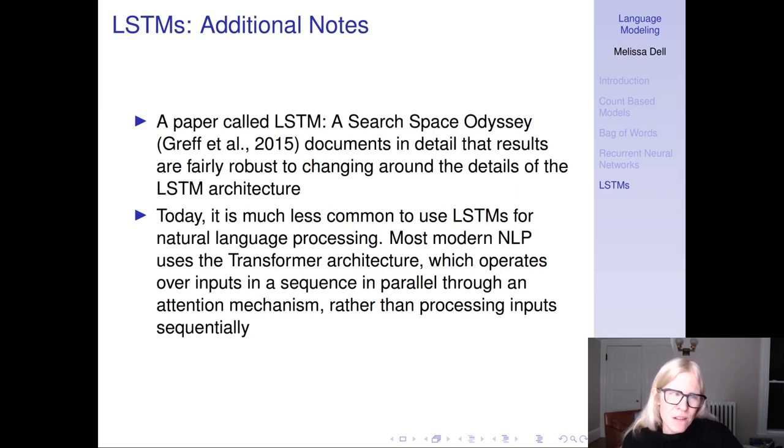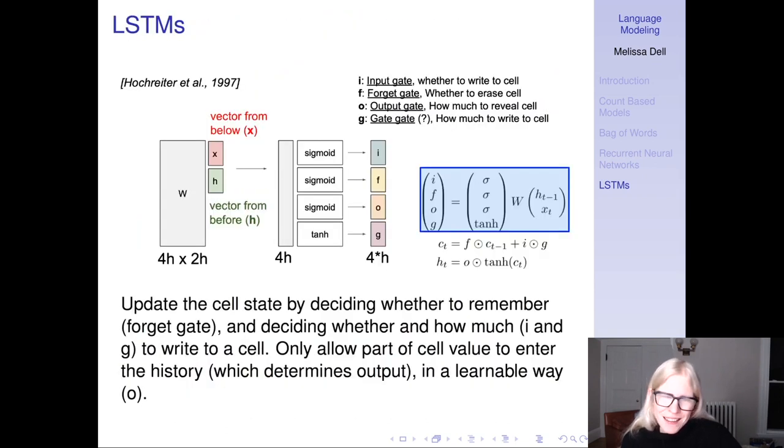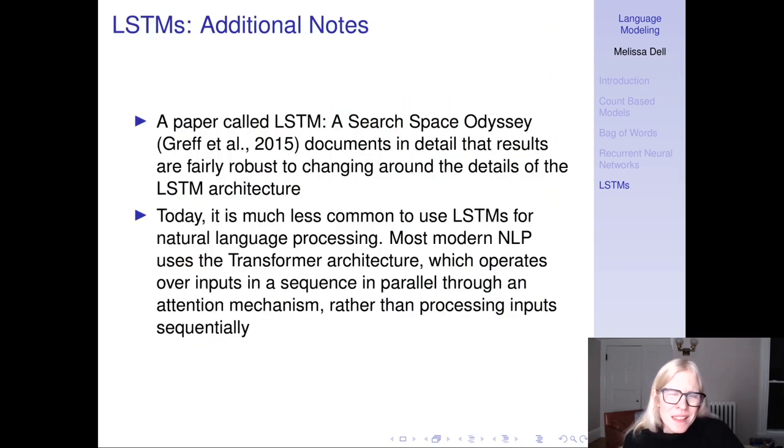I'll make just an additional note. I put a paper on the reading list called 'LSTM: A Search Space Odyssey' that documents in detail that results are fairly robust to changing the details around the LSTM architecture. You probably wondered why it took exactly this particular form, and they look at robustness to that. Today, it's much less common to see LSTMs used for NLP - they're just really outperformed by the transformer architecture, which operates over inputs in a sequence in parallel through an attention mechanism rather than processing the input sequentially. You probably wouldn't use an LSTM in your research, but you'll still see it sometimes, so it's good to understand what it is. That is it for language modeling. Remember to watch the videos about words and also about sequence-to-sequence as well. Thank you.